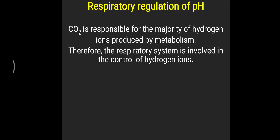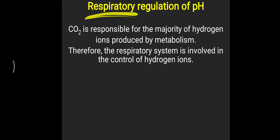Carbon dioxide is responsible for the majority of hydrogen ions produced by metabolism; therefore, the respiratory system is involved in controlling hydrogen ion concentration. When there is acidosis, the body eliminates more carbon dioxide through hyperventilation. When there is alkalosis, H+ concentration is decreased, and normalization is achieved by increasing carbon dioxide levels inside the body through hypoventilation. That is how the respiratory center regulates pH by controlling our respiratory rate, which ranges from 12 to 16 per minute.